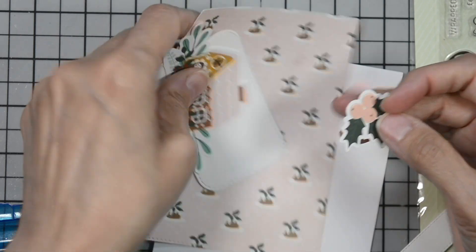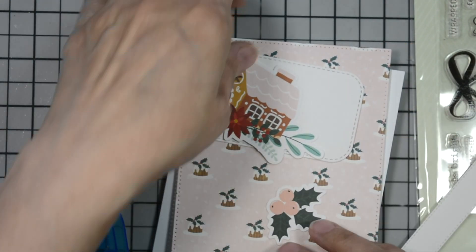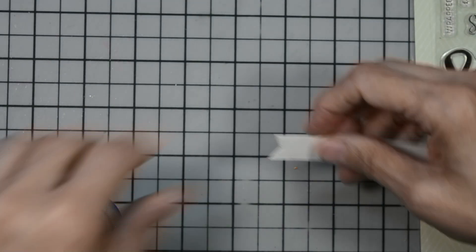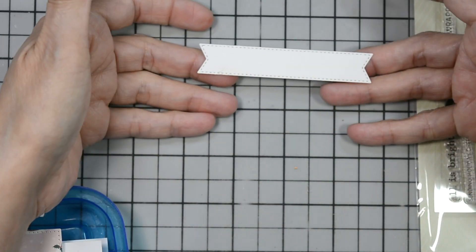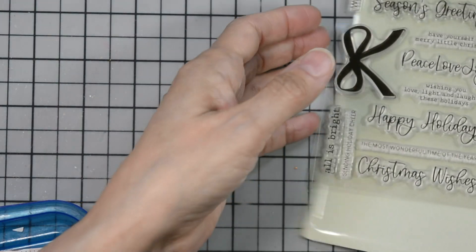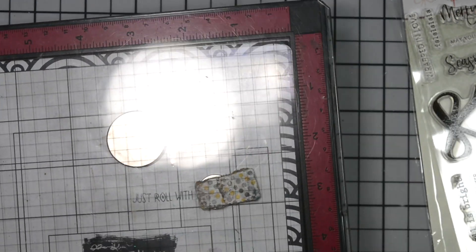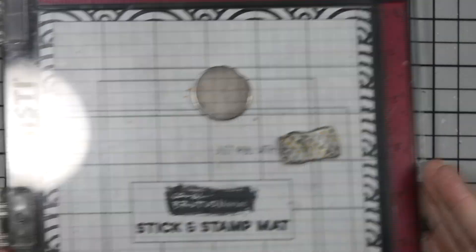And I have the holly berry. And the holly berries in this ephemera pack have red berries and pink berries. I chose this one with the pink because it coordinates nicely with the pattern paper. And I have a sentiment strip cut from white cardstock. Again we'll be using the Happy Holidays sentiment. So let's go ahead and jump into our card.